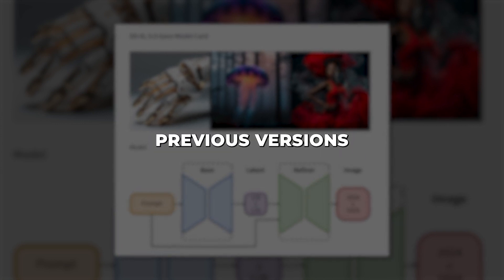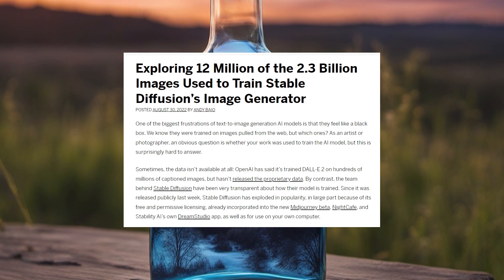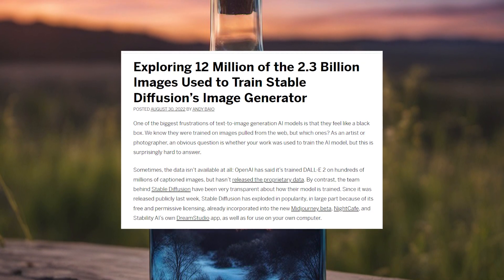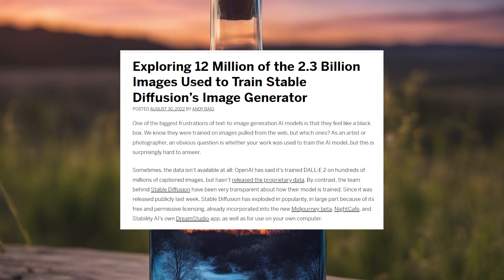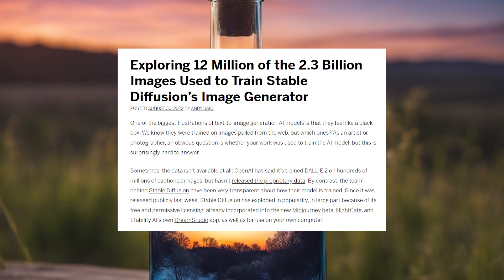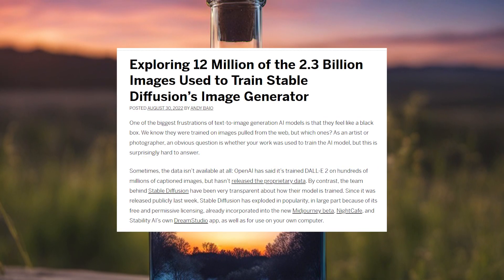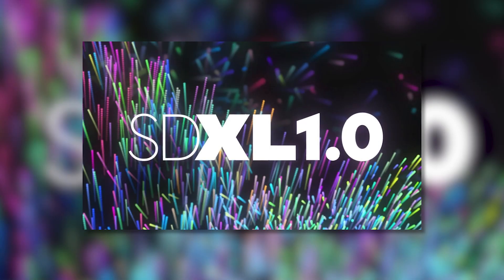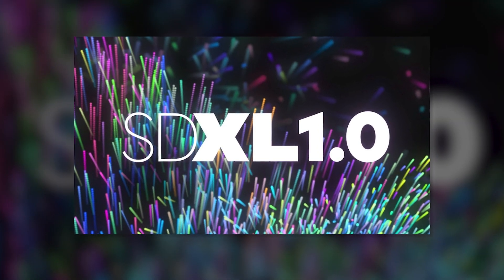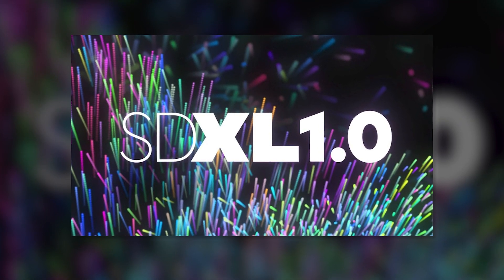Stable Diffusion XL represents a major upgrade over previous versions of the model. SDXL was trained on an even larger dataset of over 2 billion text-image pairs, compared to 1.8 billion for the original Stable Diffusion, and it incorporates architectural improvements to the model developed by researchers at Stability AI.